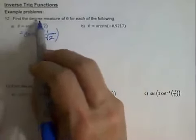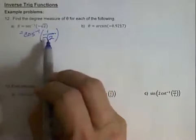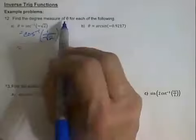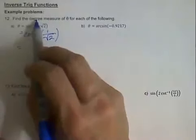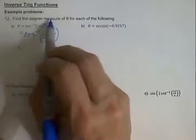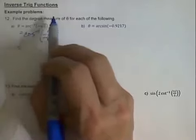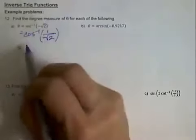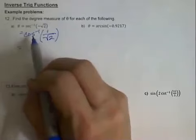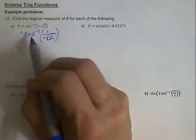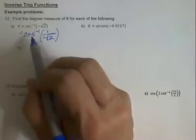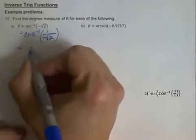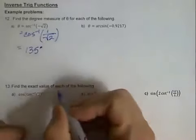Since we're looking for a degree measure, we could do this on the calculator. Be very careful that you know what mode your calculator is in — we want degree mode. Then we would just do inverse cosine of negative 1 over the square root of 2, and that's going to give us 135 degrees.